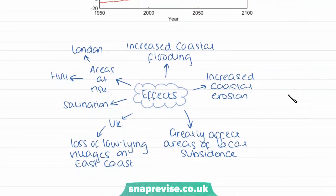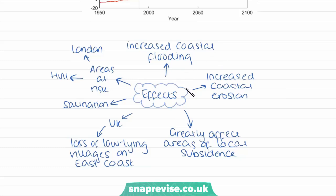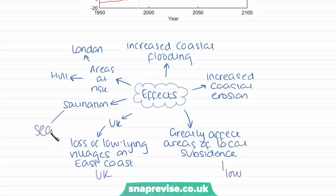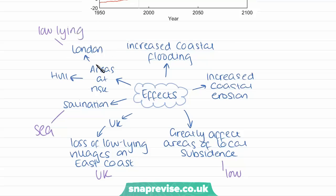Some effects of predicted sea level change include increased coastal flooding, increased coastal erosion, and greatly affected areas of local subsidence. Low-lying areas will be more easily flooded, such as low-lying villages on the east coast of the UK. There may also be salination, where saltwater comes into contact with fresh water, making it salty and ruining it as a drinking water source — it is expensive to desalinate it afterwards. Areas in the UK at risk include London and Hull, which are low-lying areas on estuaries — if sea level rises, much of London could end up flooded.